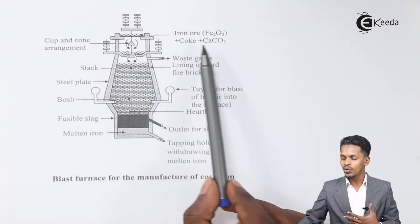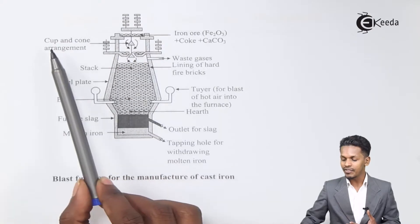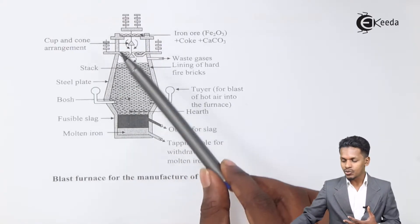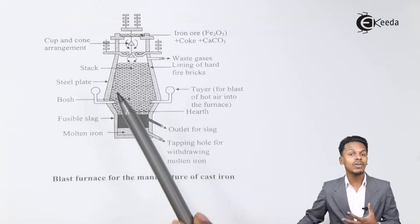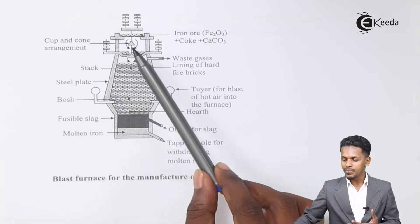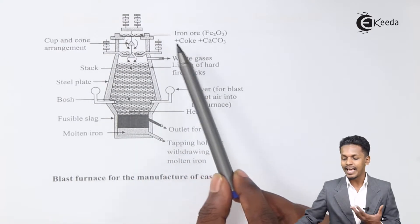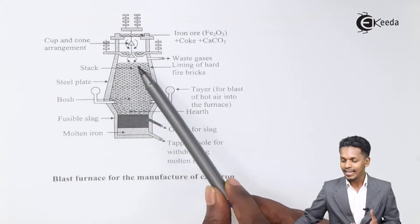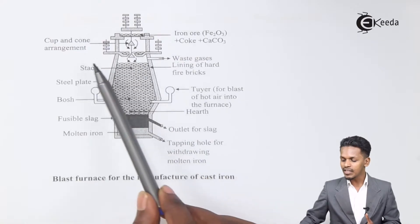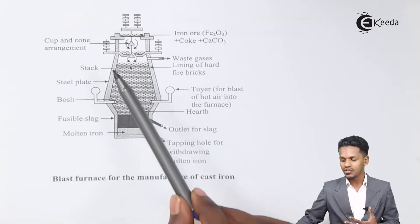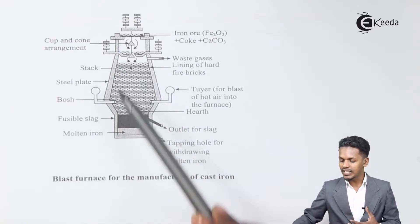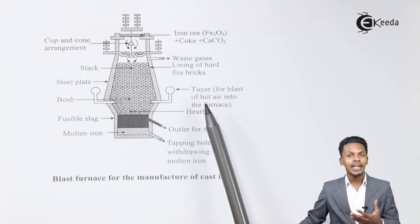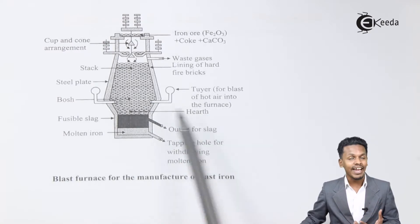The charge — iron ore, coke, and CaCO3 (limestone) — is fed through a cup and cone arrangement. This arrangement allows the ore to be inserted into the blast furnace while preventing gas or heat from escaping. The blast furnace is lined throughout with hard fire bricks which act as heat-resistant material.